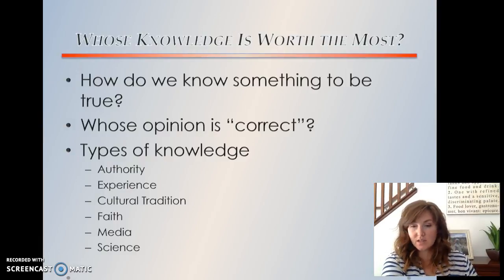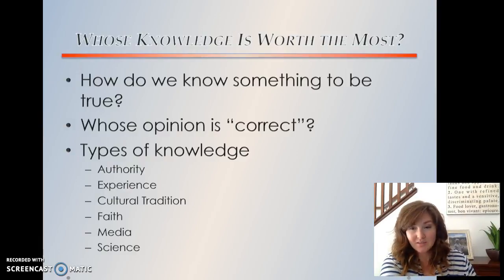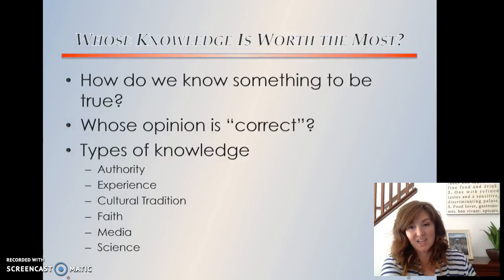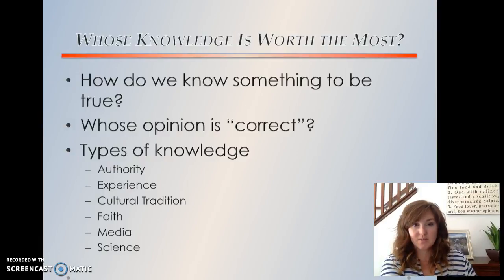First question to ask ourselves is: how do we know something to be true? Whose knowledge is worth the most? Really, no one's opinion is correct, but if we think back to postmodernism, every experience is valid — no experience has more than the other. But there are a couple types of knowledge that we need to discuss: authority, experience, cultural tradition, faith, media, and science.